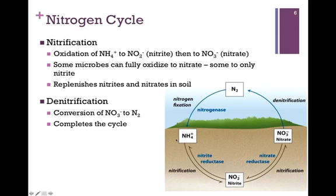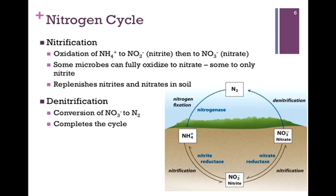The corollary of that is the process of nitrification, illustrated as the outer portion of our cycle. Nitrification involves the oxidation of ammonia to form nitrite, and then the further oxidation of nitrite to form nitrate — the exact opposite of the nitrate and nitrite reductase reactions. Some organisms can fully oxidize ammonia to nitrate, and some only to nitrite. This serves to replenish nitrates and nitrites in the soil. There's a balance: some organisms use oxidized nitrogen to produce ammonia, and others use ammonia to produce nitrates and nitrites.